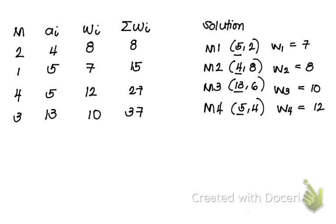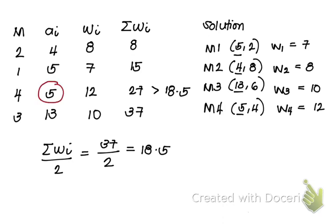Now by median method, so this method is called median method. Take the total value of your weights equivalent to 37, then divide by 2, which is 18.5. How do we know the value of the new facility or the location of the new facility? The cumulative weight that immediately exceeds or equates the value of 18.5 is your location. Looking at 8, 15, 27, and 37, 27 immediately exceeds 18.5, which gives you the x-coordinate value of the new location at 5.